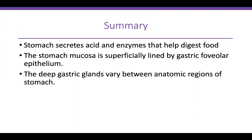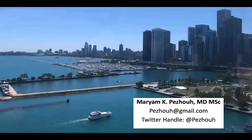In summary, the stomach secretes acid and enzymes that help digest food. The stomach mucosa is superficially lined by gastric foveolar epithelium, and the deep gastric glands vary between different anatomic regions of the stomach. Thank you — feel free to send me any questions and follow me on Twitter.